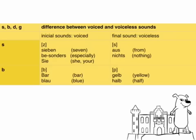Now we have the consonants S, B, D, and G. There is a difference between voiced and voiceless sounds. It might sound strange that you can voice a consonant, but we will see what it actually means. We have initial sounds — the consonant at the beginning — and final sounds. Let's see the first example: S. At the beginning it's a Z sound.